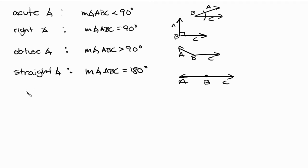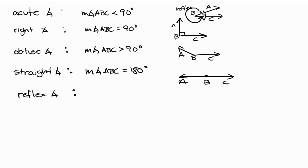The last type is the reflex angle. You see the acute angle with the measure of less than 90 degrees? The reflex angle is actually the measure on the outside — that's the reflex angle. We're going to call this particular angle CBA, and the measure of angle CBA is less than 360 degrees.